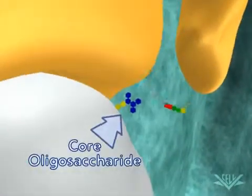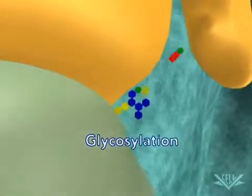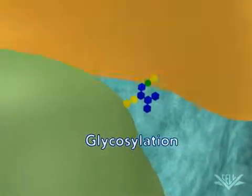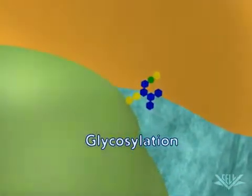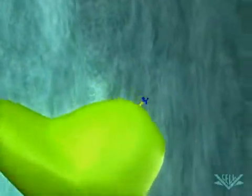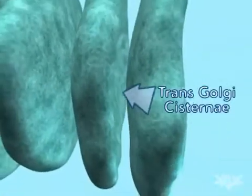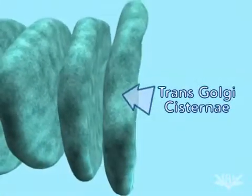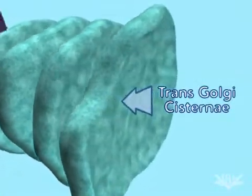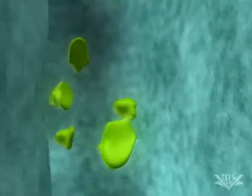Here, we show two steps involved in the production of the mannose-6-phosphate signal. In humans, defects in Golgi glycosylation can lead to specific diseases. Once the hydrolase reaches the trans-Golgi cisternae, the mannose-6-phosphate signal has been completed. Only proteins destined for the endosome have the mannose-6-phosphate signal.